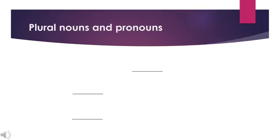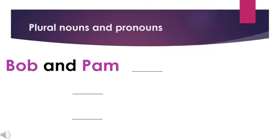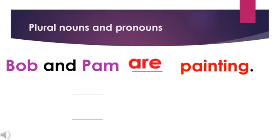The following are sentences using plural nouns and plural pronouns. Let's read the first sentence: Bob and Pam, blank, painting. Bob and Pam are plural nouns because there are two names mentioned. So if we have two nouns, they become plural. Bob and Pam are painting.